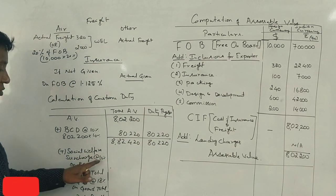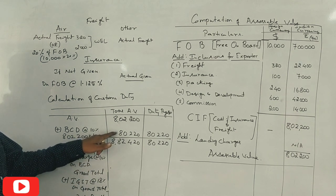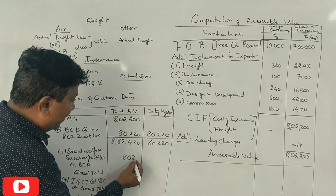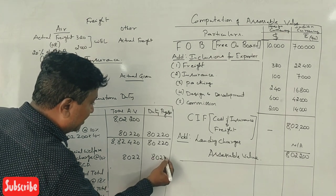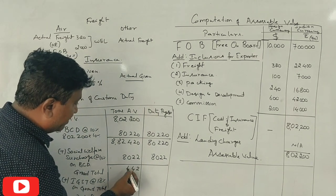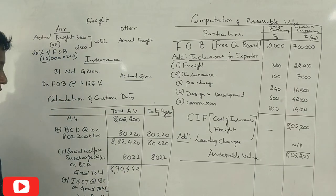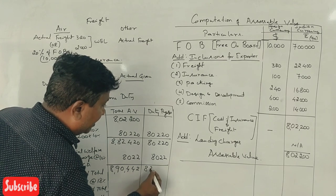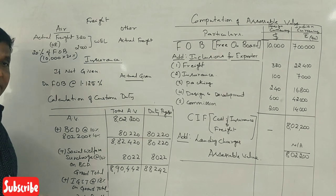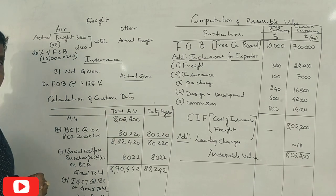Social Welfare Cess at 10% on Basic Customs Duty: 10% of ₹82,220 equals ₹8,022. Correct. Grand total after adding Social Welfare Cess: ₹8,90,442.